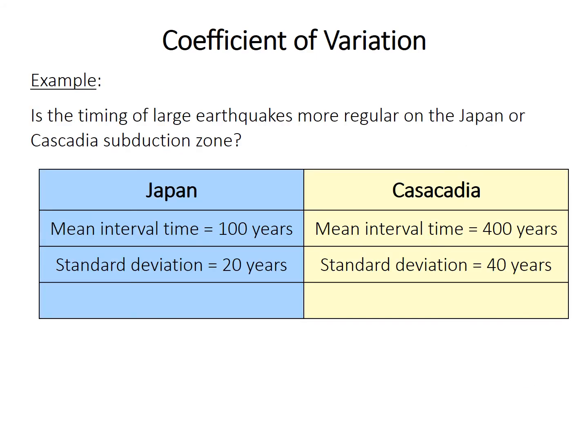So here's an illustrated example of when you might want to use coefficient of variation. Say you want to know whether large earthquakes occur more regularly in Japan or in Cascadia in North America. So this is just made-up numbers here, but it says that the mean time between earthquakes in Japan is 100 years and it's 400 years in Cascadia. And the standard deviation of the time between earthquakes is 20 years in Japan and 40 years in Cascadia. So you had a long time series of earthquakes and you measured the time between them, the standard deviation of those times between earthquakes. So it looks like the Japan subduction zone is more regular, less variable, has a lower standard deviation, but also notice that the means are quite different.